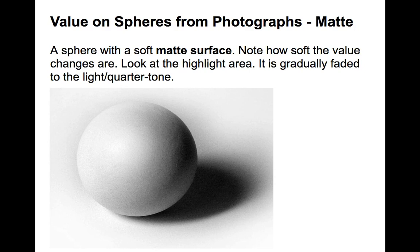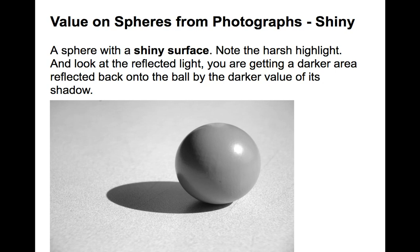Values on spheres: This is a matte sphere — note how soft the values are and how soft the cast shadow is. Here's a shiny sphere, which looks very different. Look how hard-edged the cast shadow is, and also how hard the edges are around the highlight — it's not as gradually blended.